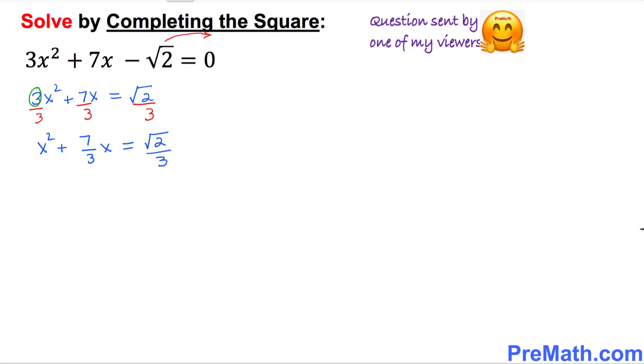Our next step is I want you to focus on the coefficient of x which is 7/3. I want you to write down 7/3 somewhere here. Now I want you to multiply this by 1/2. This is the same as dividing this quantity by 2.